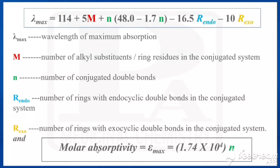One more formula is used to calculate epsilon max, that is molar absorptivity: εmax = 1.74 × 10^4 × n. By knowing the number of conjugated double bonds, we can calculate epsilon max. These are the two formulas used to calculate lambda max and epsilon max using the Fieser-Kuhn rule.